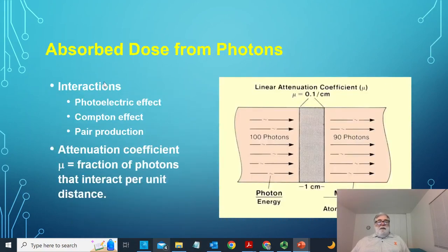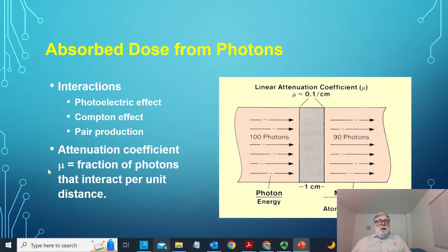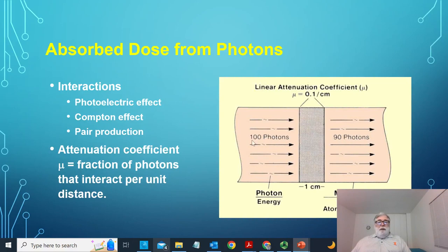How about absorbed dose from photons? We know the interactions that are going to deposit energy: the photoelectric effect, Compton effect, and pair production. We know there's an attenuation coefficient mu that gives us the fraction of photons that interact per unit distance. For example, with an attenuation constant of 0.1 per centimeter, in one centimeter of material the fraction lost is 0.1 — so 10% of the photons, say 10 out of 100, are absorbed in that layer, and 90 photons pass through.